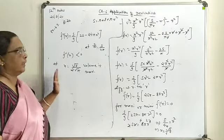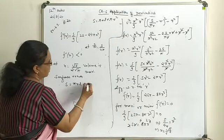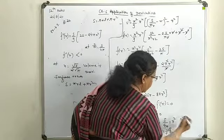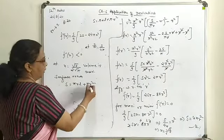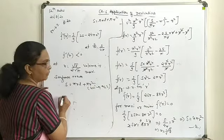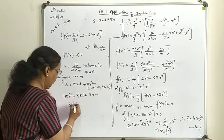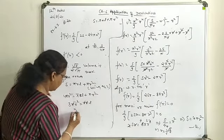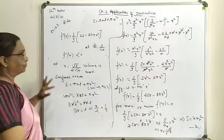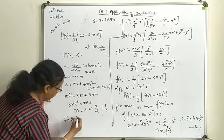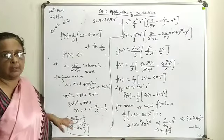Now we find sin θ. The surface area is S = πrL + πr². Using S = 4πr²: 4πr² = πrL + πr², so 3πr² = πrL, and 3r = L, meaning r/L = 1/3. Since sin θ = r/L = 1/3, therefore θ = sin⁻¹(1/3). This is how the semi-vertical angle is derived. Thank you.